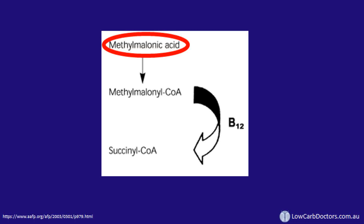So keep up with the eggs and liver. The second functional test for B12 deficiency is methylmalonic acid. B12 is necessary for the eventual conversion of methylmalonic acid to succinyl-CoA, so B12 deficiency will therefore lead to an increase in the levels of methylmalonic acid.